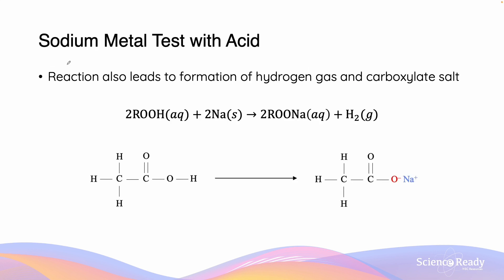Here we have a reaction between sodium metal and an acid. The reaction involves ethanoic acid, which is C₂H₄O₂, where the R group in the RCOOH is C₂H₃. This reaction with sodium leads to the formation of a carboxylate salt and hydrogen gas. Unfortunately, both acids and alcohols react with sodium to form hydrogen gas, so this test is unable to distinguish between the two substances.